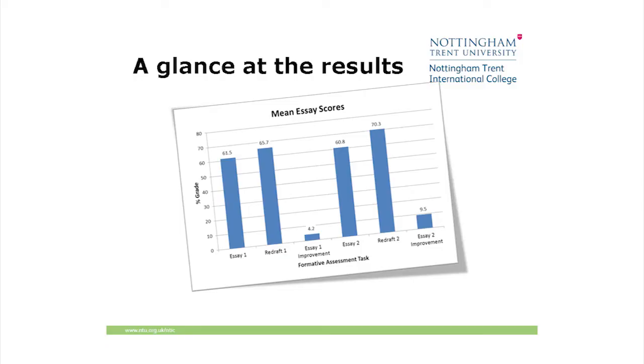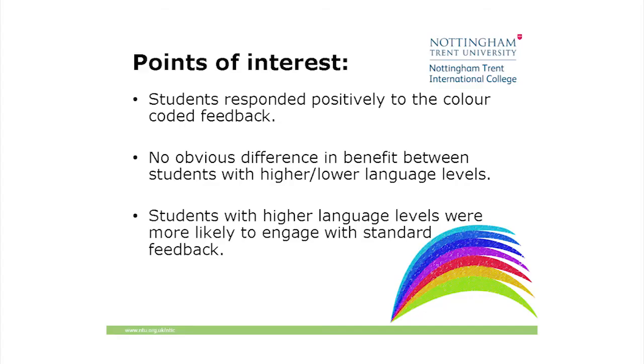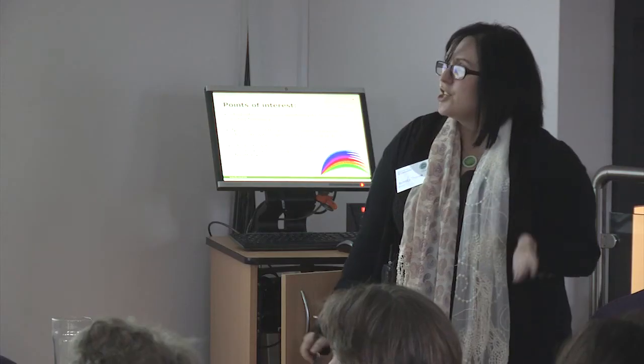Here are the mean essay scores: essay one redraft had an average difference of 4.2; essay two redraft had an average difference of 9.5. I will mention I was not the class teacher — I did this in a controlled way with no power relationship. What's quite interesting is there wasn't much difference in the starting scores. Students responded positively from what they said to their teacher. There was no obvious difference for higher or lower level students with colour coded feedback — they all improved about the same proportion. Higher level students were more likely to engage with standard feedback because they could decode the language.